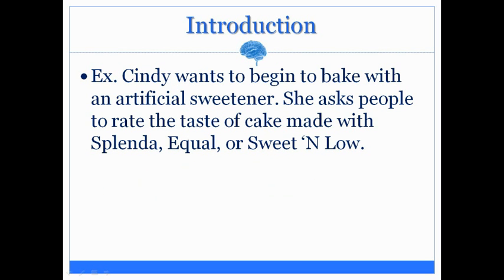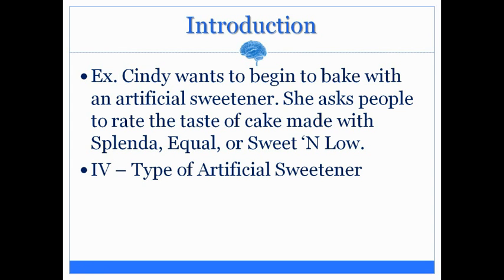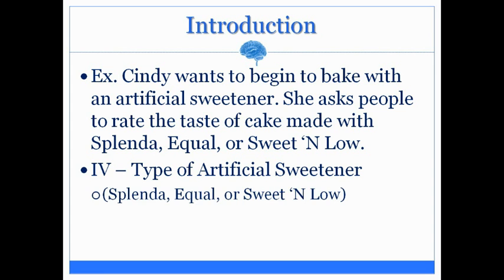Please try this example for yourself. Cindy wants to begin baking with an artificial sweetener. She asks people to rate the taste of cake made with Splenda, Equal, or Sweet'n Low. Take a moment and attempt to determine the independent variable as well as the number of levels. The independent variable is the type of artificial sweetener used, and this consists of three separate groups: the Splenda, the Equal, and the Sweet'n Low group. So you have one independent variable with three levels.